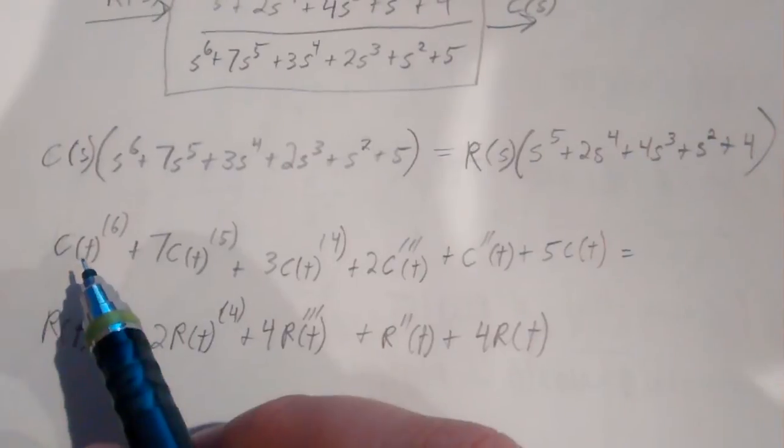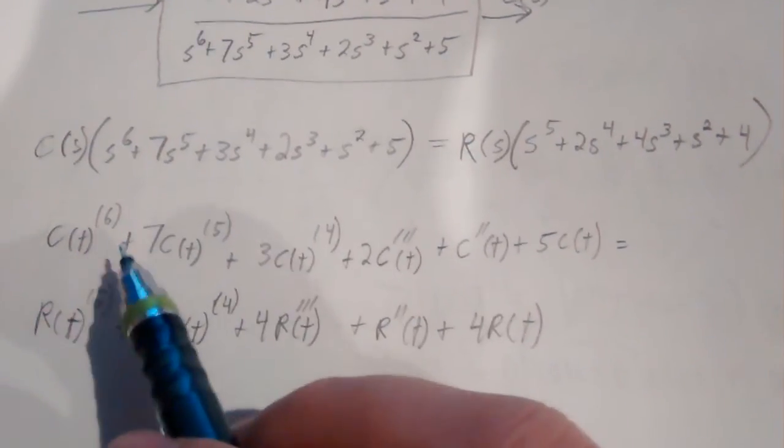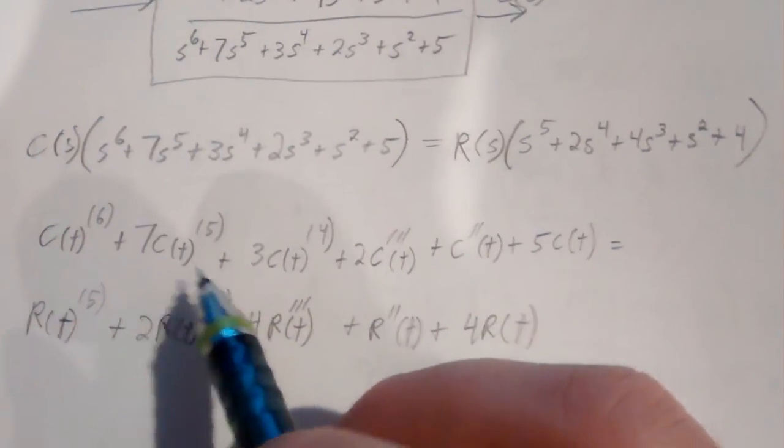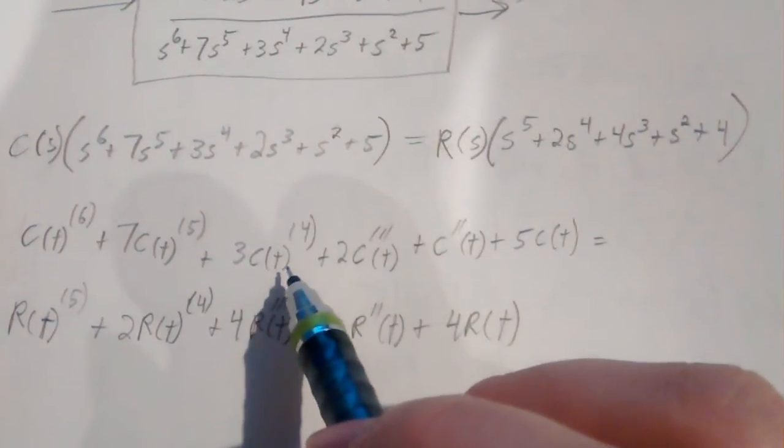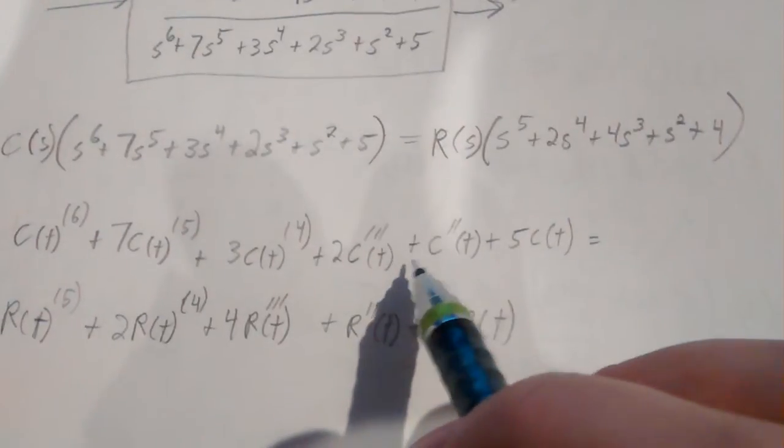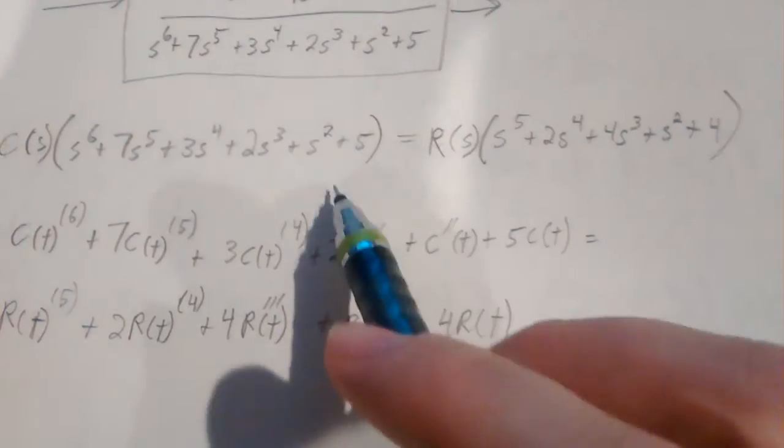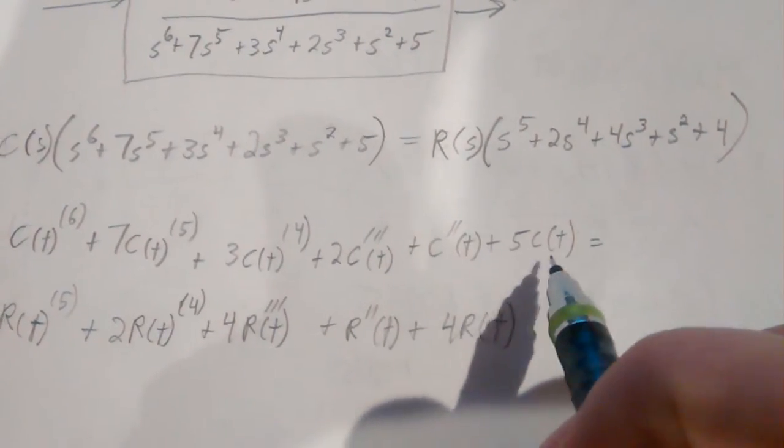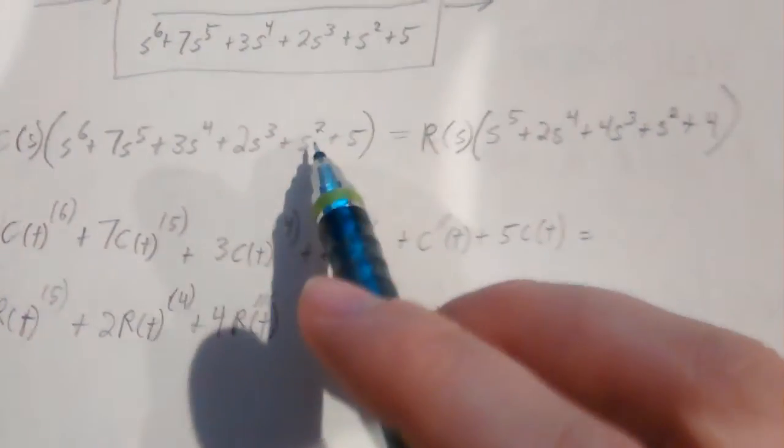So we have the 6th derivative of C of T plus 7 times the 5th derivative of C of T plus 3 times the 4th derivative of C of T plus 2 times the 3rd derivative of C of T plus 2nd derivative of C of T, no coefficient, plus 5 times C of T, no derivative here because there's no S.